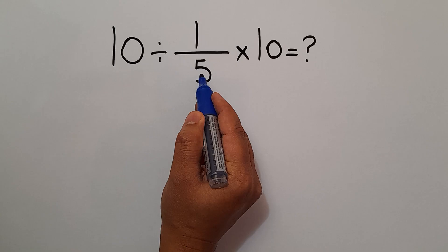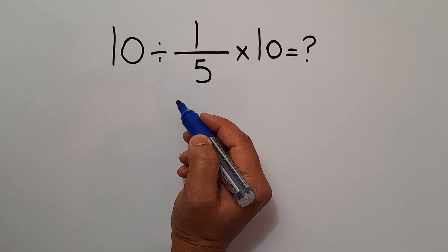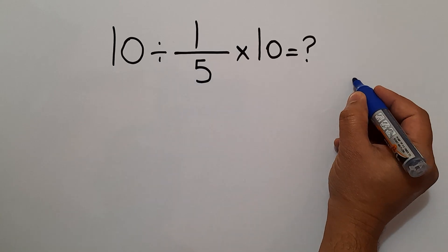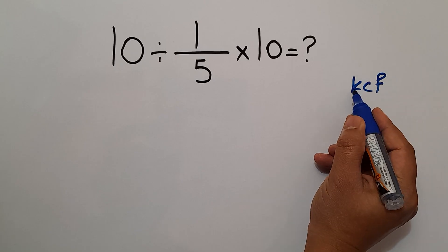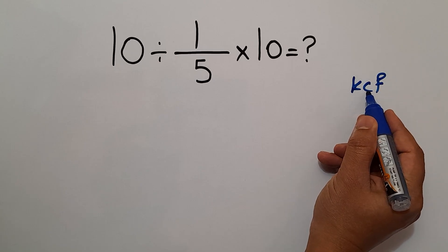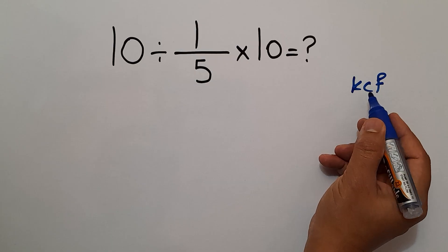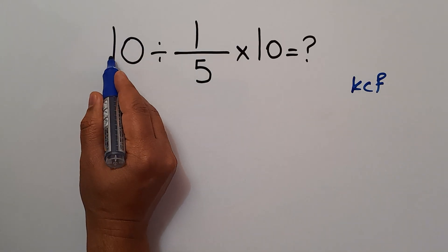So here, according to the KCF rule: K stands for Keep, C stands for Change, and F stands for Flip. Keep the first fraction, which is 10 over 1.